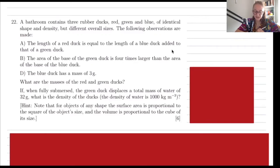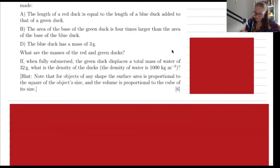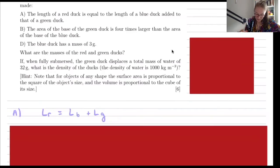This question says that a bathroom contains three rubber ducks — red, green, and blue — of identical shape and density but different overall sizes. The following observations are made. The first one is that the length of the red duck is equal to the length of the blue duck added to that of the green duck. So written mathematically: length of R equals length of blue plus length of green.